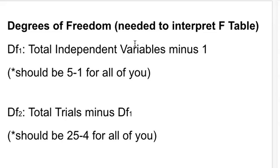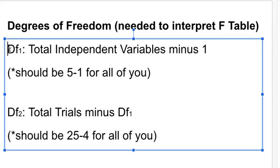Other things that you have to calculate are degrees of freedom. These are going to be needed to interpret the F table of the critical values. So DF1, degrees of freedom 1, is the total independent variables minus 1.